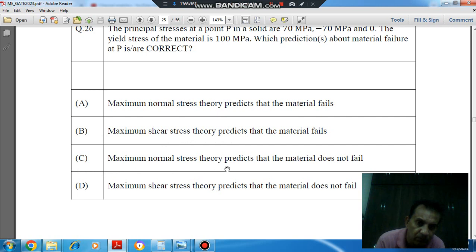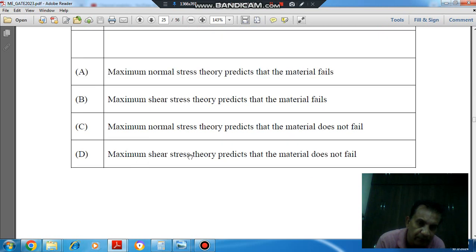Option C: Maximum normal stress theory predicts that the material does not fail. And Option D: Maximum shear stress theory predicts that the material does not fail.